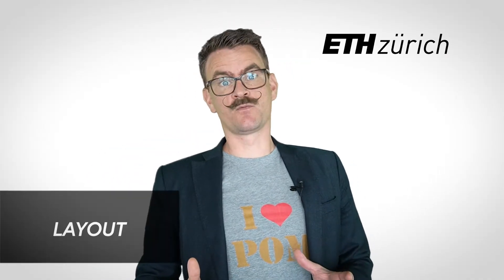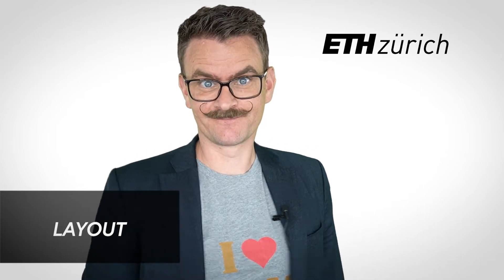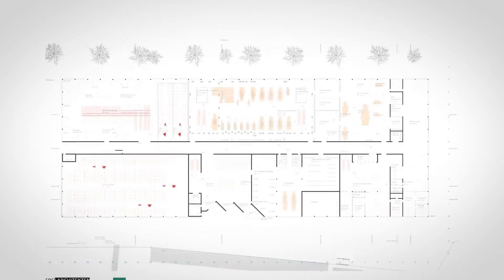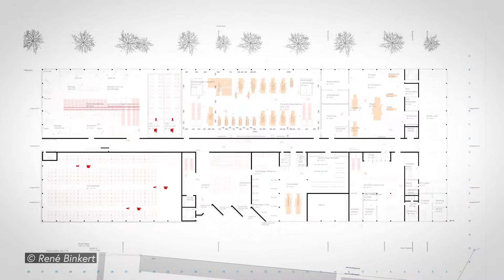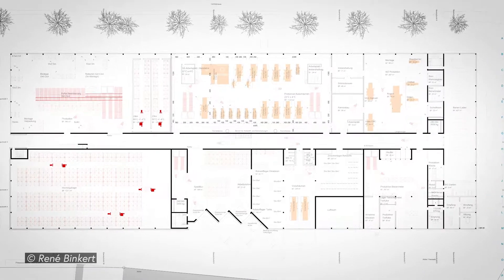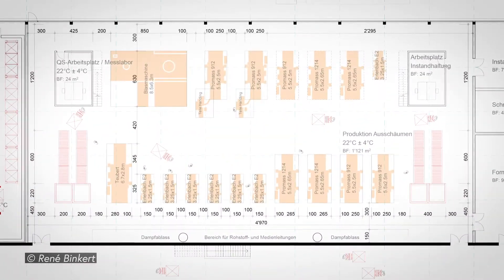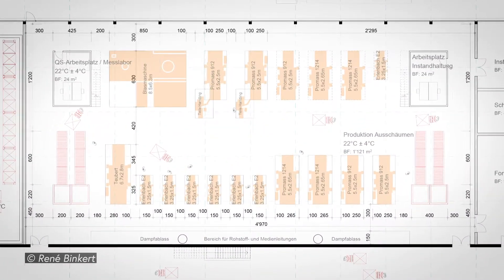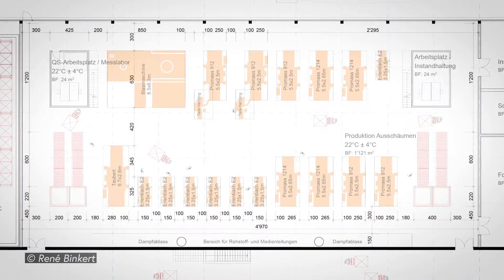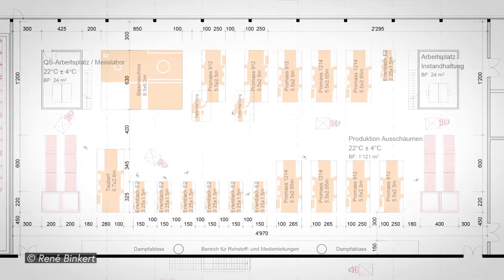Hi again, and this time we will talk about layout. A layout is a floor plan. Layouts exist at different granularities. A macro layout shows the relative positioning of buildings and departments. A micro layout shows how production equipment, storage, transport and open space is organized.